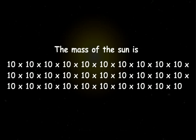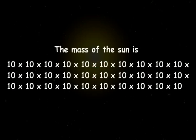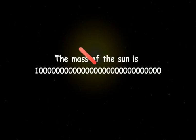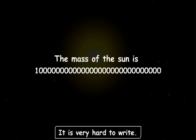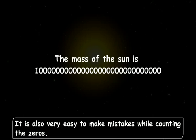So, if you have to write the mass of the sun in your copy, how will you write it? Will you write this way? Of course not. It is very hard to write. It is time-consuming. And it is also very easy to make mistakes while counting the zeros.